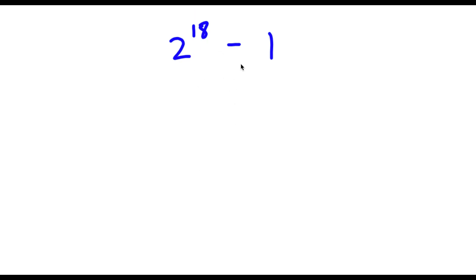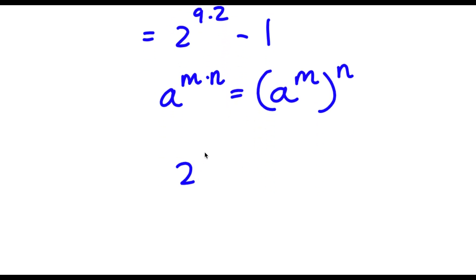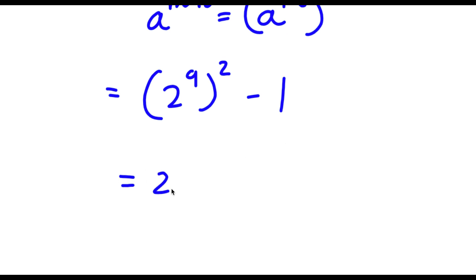Alright, so I have 2 to the power of 18 minus 1. I'm first going to rewrite 2 to the power of 18 as 2 to the power of 9 times 2. So now I have 2 to the power of 9 times 2, minus 1. Since a to the power of m times n equals a to the power of m to the power of n, I rewrite this as 2 to the power of 9, to the power of 2, minus 1. Now, 1 here is the same thing as 1 squared.